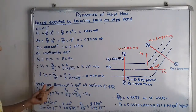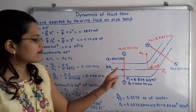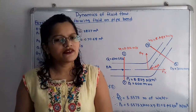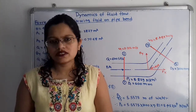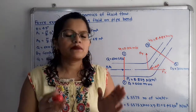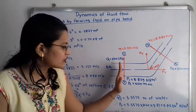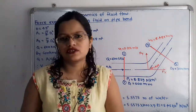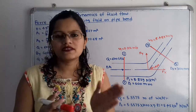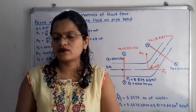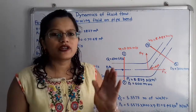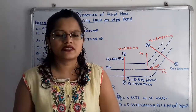For steady flow we apply Bernoulli's equation: pressure head + kinetic head + datum head at section 1 equals the same at section 2. That is: p1/(ρg) + V1²/(2g) + z1 = p2/(ρg) + V2²/(2g) + z2.